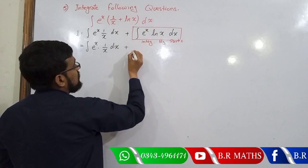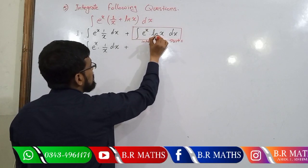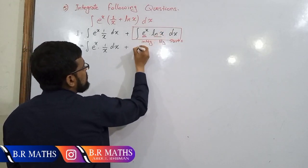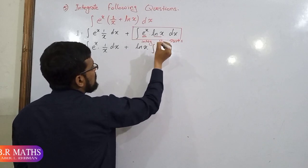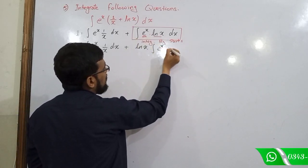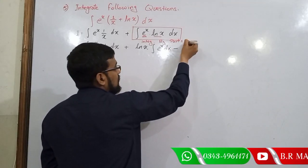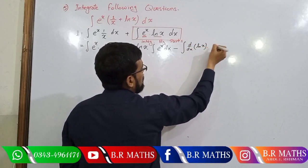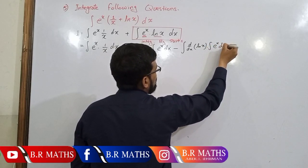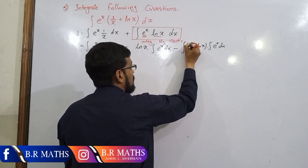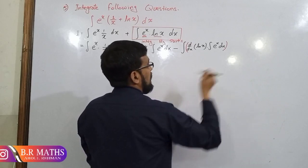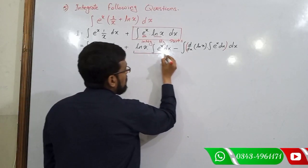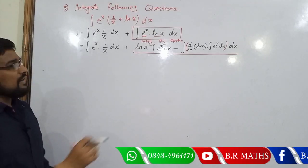According to the rule of integration by parts, natural log is the first function and exponential is the second function. The first function remains as it is, then integration of e raised to power x, minus the whole integration of the derivative of the first function times the integration of the second function dx.